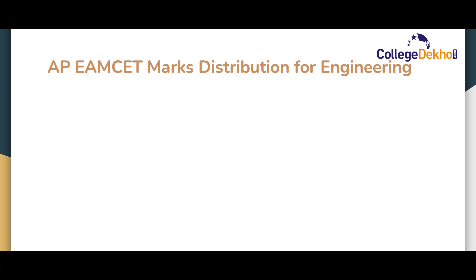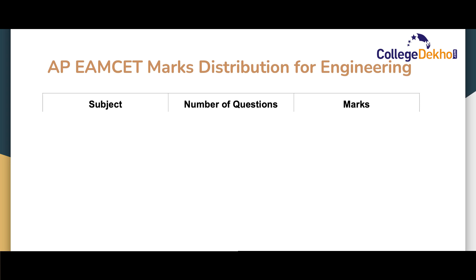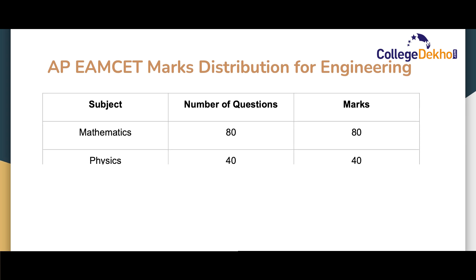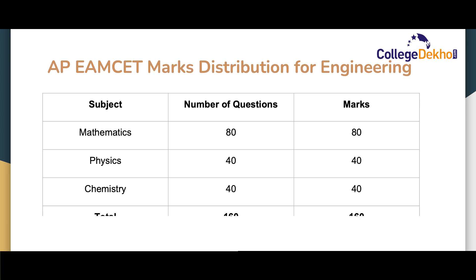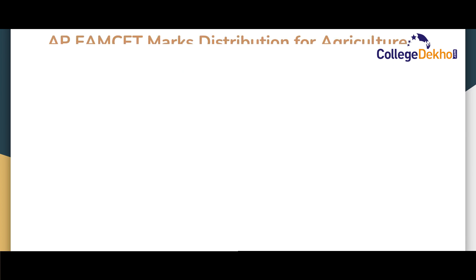Now let us look at the marks distribution for the engineering exam in AP EMSET. For mathematics, there will be a total of 80 questions for a total of 80 marks. Physics will have a total of 40 questions for 40 marks. Chemistry will have a total of 40 questions for 40 marks. The exam will overall consist of a total of 160 questions for a total of 160 marks.